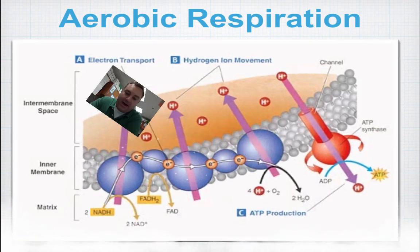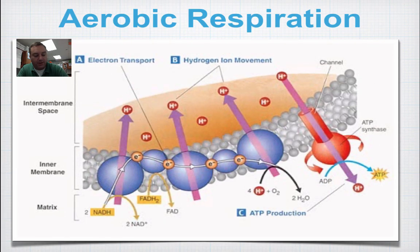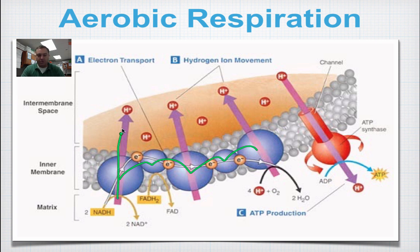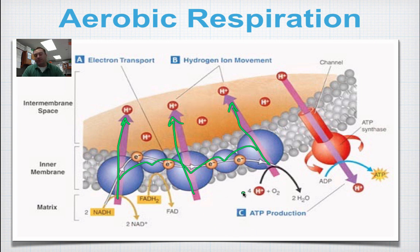Here's how it all happens. The NADH and FADH2 drop off an electron, and that electron hops from protein to protein. Every time it hops, that energy is used to pump a hydrogen ion across this membrane, building a proton gradient — high concentration on one side, low concentration on the other. These protons want to diffuse back through the membrane by going through ATP synthase, and every time they do, it clicks and creates an ATP molecule.